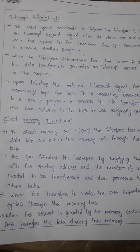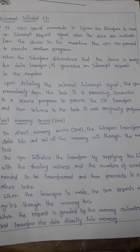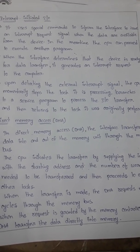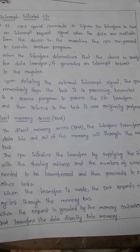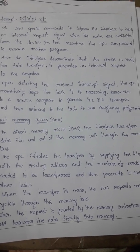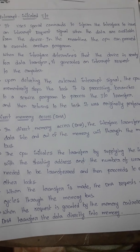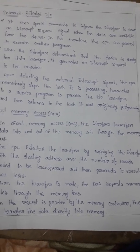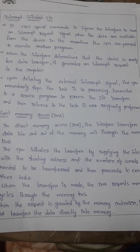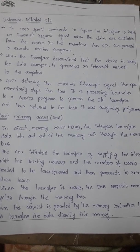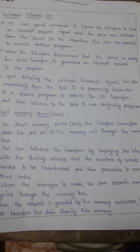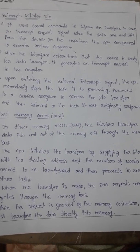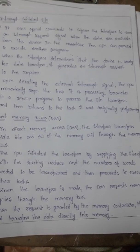The third mode of data transfer is direct memory access (DMA). In DMA, whatever data we are receiving from the I/O devices is transferred directly to the memory. The interface transfers the data into and out of memory through the memory bus. This transfer is initiated by the CPU by supplying the DMA interface with the starting address and number of words needed to be transferred, and then the CPU proceeds to execute other tasks.